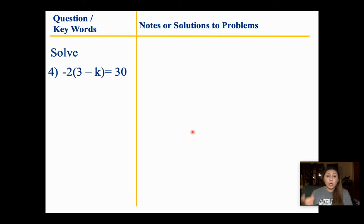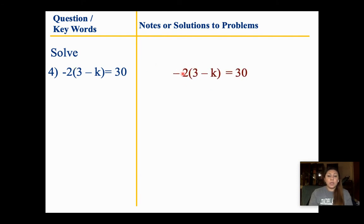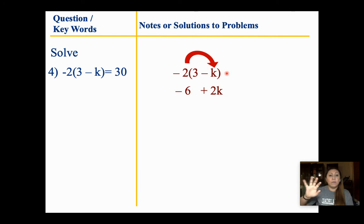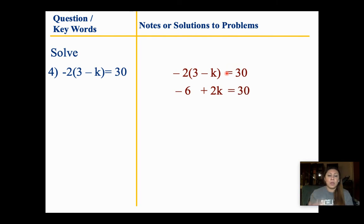Question 4 — we're going to go one step further. I had you thinking about combining like terms; now we're going to add distribution. Distributing means I'm going to multiply everything inside the parentheses by the number on the outside. I have a negative 2, so everything inside needs to be partnered with it. Negative 2 times 3 gives me negative 6. Negative 2 times a negative k — a negative times a negative gives me a positive — so I have positive 2k. Then I bring the 30 back, and now we have a normal two-step equation.